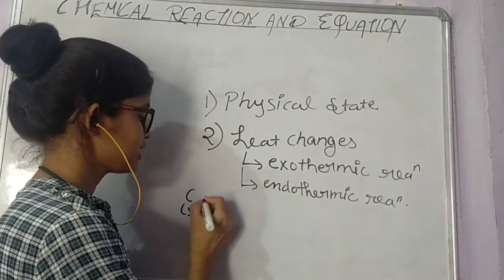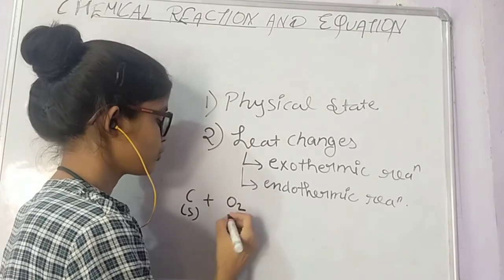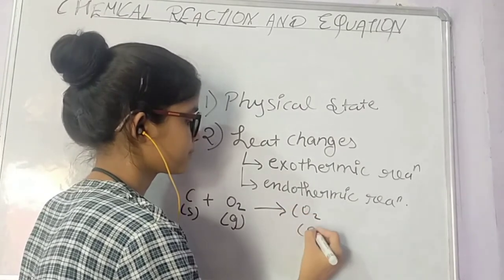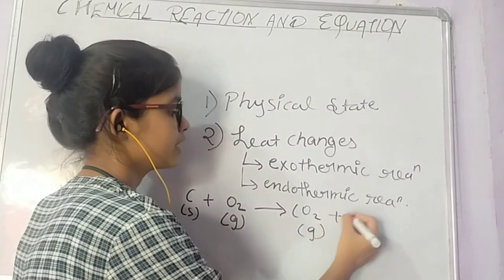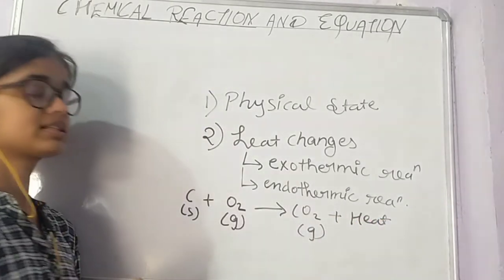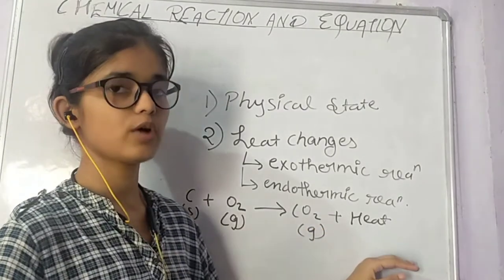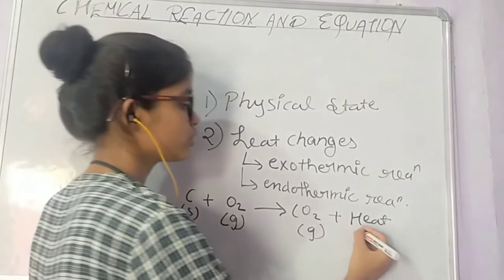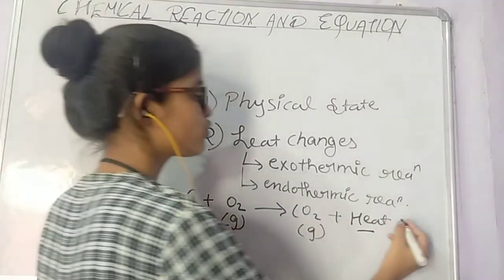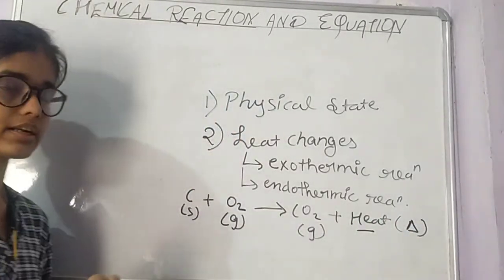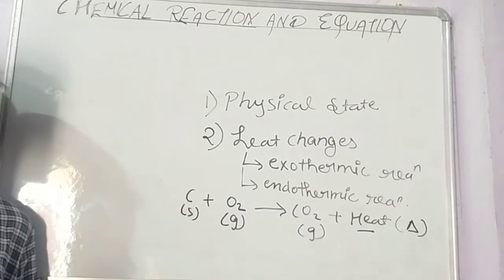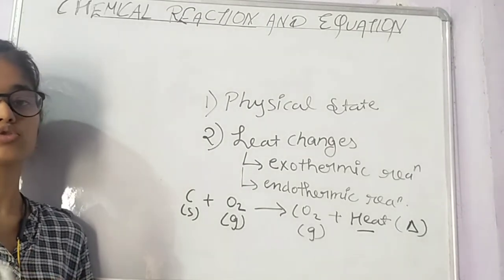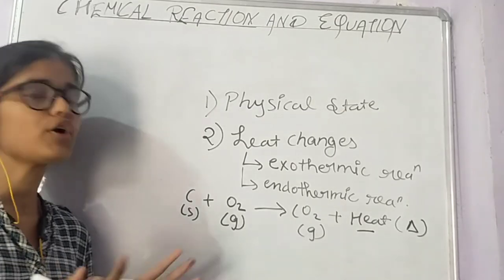For example, C in solid state plus O2 in gas form gives CO2, and heat is also evolved. In an exothermic reaction, we put heat on the product side and represent the heat using a triangle symbol. Respiration in human beings and living organisms is also an exothermic reaction.